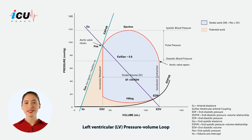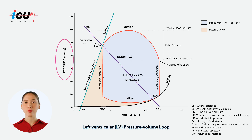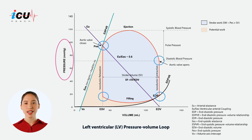On the x-axis, the left ventricular volume is measured in milliliters, and it is plotted against the left ventricular pressure measured in mmHg on the y-axis. The loop is divided into several distinct phases that illustrate the mechanical function of the heart.